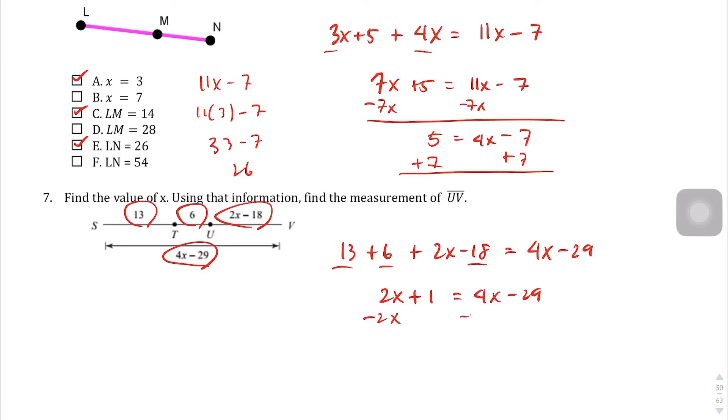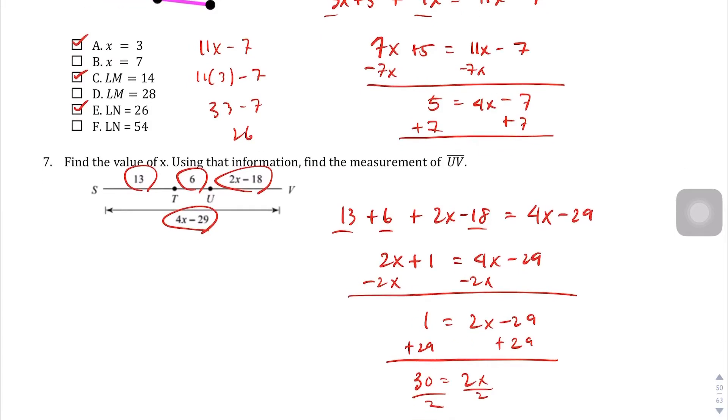Let's subtract 2X from both sides. You get 1 equals 2X minus 29. Let's add 29 to both sides. You get 30 equals 2X divided by 2. You get 15 equals X. So that's part of the answer. 15 equals X. And then they want UV. They just want this segment right here, UV. So 2X minus 18. So instead of X, we're going to put 15 minus 18. So this is 30 minus 18, so you're going to end up with 12. So UV equals 12 is your other answer.